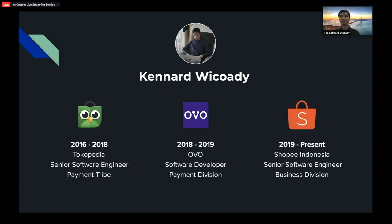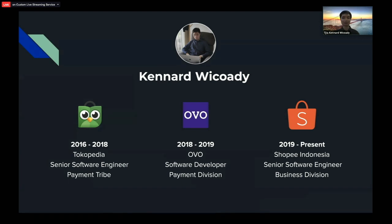At Shopee Indonesia, we work on applications and services to engage customers to use our product. Previously, I also worked at Tokopedia and OVO. Tokopedia is one of the largest e-commerce platforms in Indonesia. OVO is the payment gateway used in Indonesia's Grab.